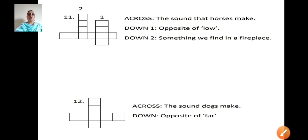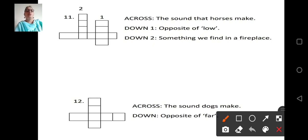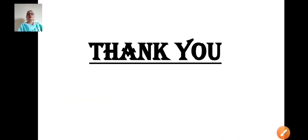Now eleventh puzzle. Across. The sound that horses make. Five letter word. Yes. It is N-E-I-G-H neigh. First down, opposite of low. Very simple. Third letter is G. So it is H-I-G-H high. And second down is something we find in a fireplace. The answer is hidden in the question itself. Obviously we find fire. F-I-R-E. Now twelfth and last one. Across. The sound that dogs make. Sound of a dog is bark. And opposite of far is near. N-E-A-R. So children, this way we have covered our chapter 3 in today's class. So I hope you enjoyed solving the crossword puzzle. It is really very interesting. Try to solve many more puzzles. Let's stop here children.